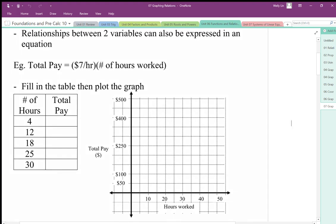So here's our relationship. This person is getting paid $7 an hour, so we multiply that by the number of hours worked, which gives us the total pay. The relationship is the hours worked and the total pay.